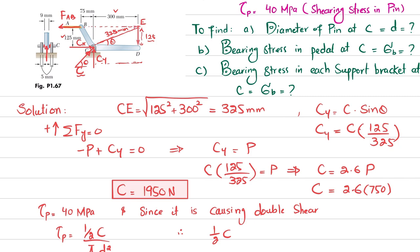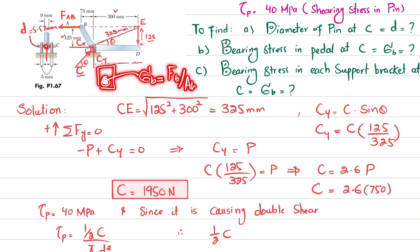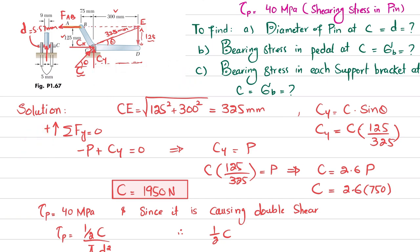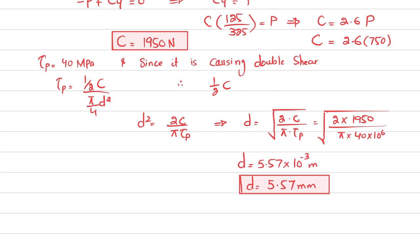So the required diameter of the pin at point C is d equals 5.57 millimeters. Now looking at this point, the pedal has a hole with this diameter. We need to find the bearing stress. Bearing stress equals bearing force divided by bearing area. For a three-dimensional hole, the bearing area equals diameter times thickness: d times t.